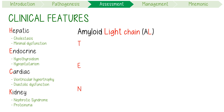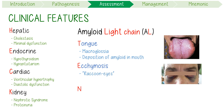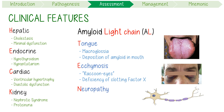T stands for a big tongue, or macroglossia. This is a pathognomonic sign and occurs because of abnormal deposition of amyloid protein in the mouth. E stands for ecchymosis, which presents with the classic raccoon eyes. This occurs due to a deficiency of clotting factor 10 after amyloid fibrils bind to it and deplete a patient's normal reservoir. N stands for peripheral neuropathy, most commonly in the form of carpal tunnel syndrome.